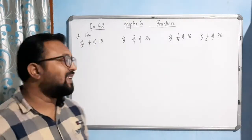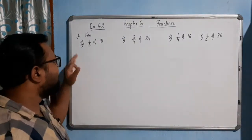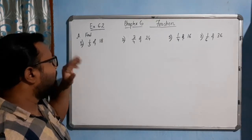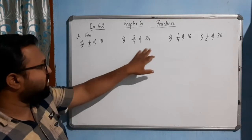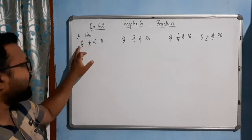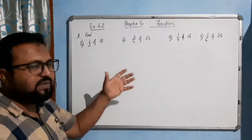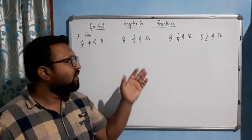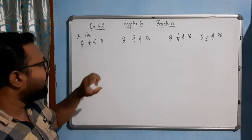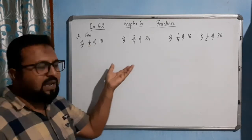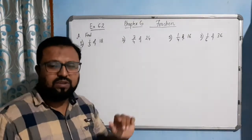Hello students, now come to the next exercise 6.2 of this chapter. Question number A. We need to find 1 by 3 of 18. I have chosen some questions from this question number A — the first, third, fifth and seventh questions. Rest you will try at home. I will show this diagrammatically and by the actual calculation which you have to do in your copies.